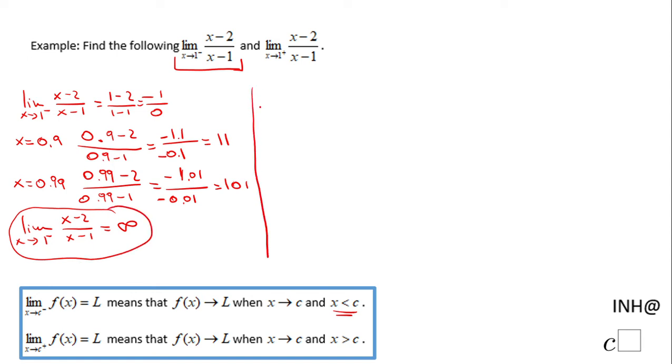We're going to do a similar approach for the second limit. Notice the second limit says limit as x approaches 1 from the right, meaning values larger than 1. Again, you can do the same approach: replace the 1 in the expression and obviously we're going to get the same negative 1 over 0, which is undefined. But now let's see how much the limit is.